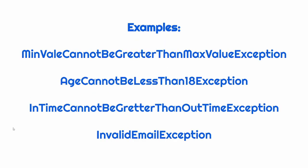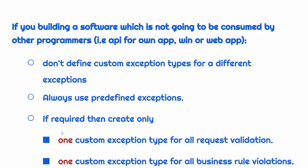For example, in your NuGet package or library, if you have such specific exception classes, then you are going in the right direction. But if you are building software like a web, Windows, or mobile app or web APIs, and it is not a library package, then you will not need separate custom exception classes for different types of exceptions. You can just use all built-in exception classes as we did in the last session, or at most you can define one exception class to handle all types of exceptions.